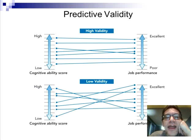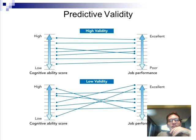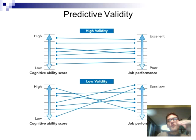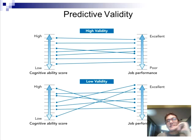Something that has high validity shows essentially parallel lines — each line represents an individual person. Here they're looking at predictive validity: a cognitive ability score and job performance, in other words an IQ test score and job performance. Those scoring higher on cognitive ability tend to score higher on job performance — high validity. In the bottom example, those that score high on the cognitive test don't necessarily score high on the job — that's low predictive validity.